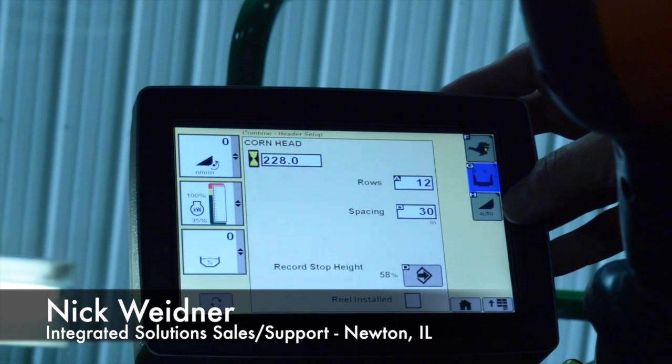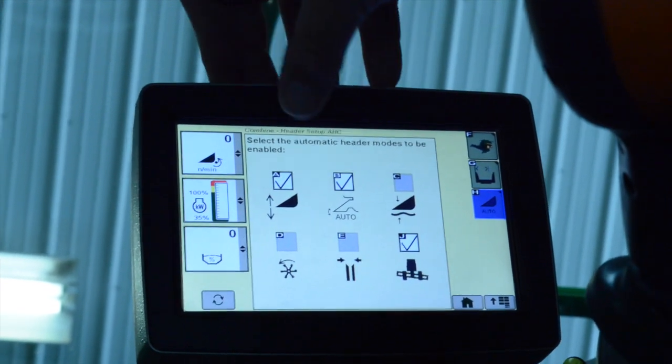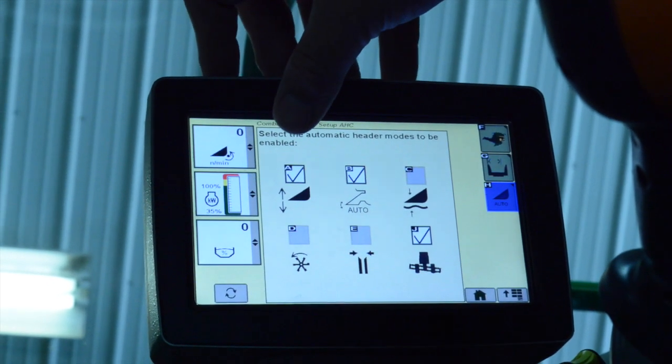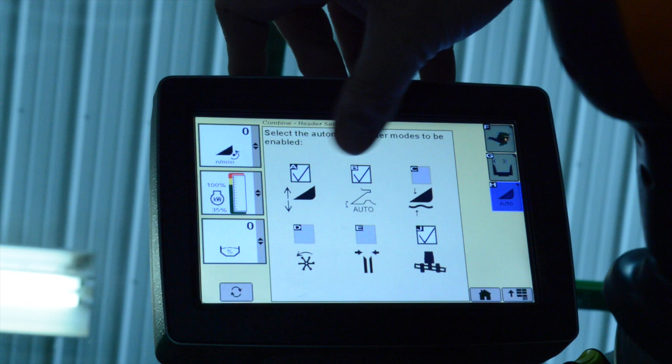From there, what we're going to do is go to auto, which brings in our settings. We would like to have letter A checked, which is our header height sensing for the feeders on the corn head's snoots.